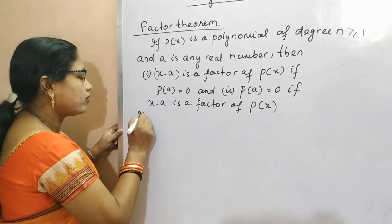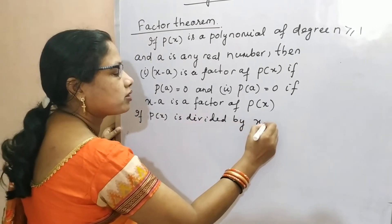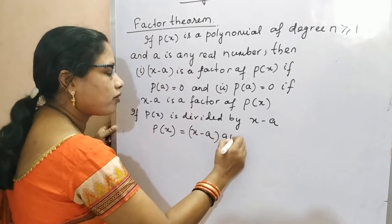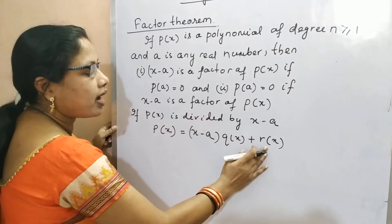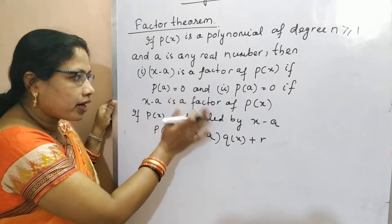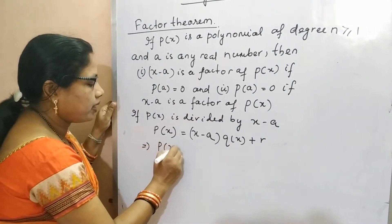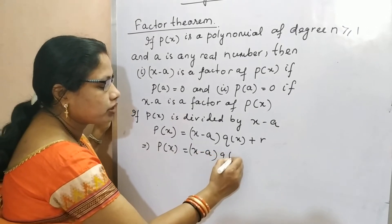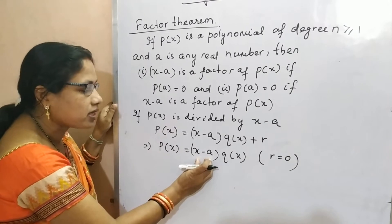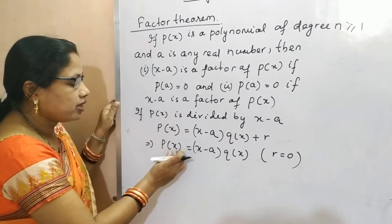What is our remainder theorem? If P of X is divided by X minus A, then P of X is equal to X minus A, whole into Q of X, plus R, where R is the remainder. In the first statement, it is given that P of A is equal to 0. According to the remainder theorem, P of A is the remainder, so the remainder is equal to 0. This implies P of X is equal to X minus A, whole into Q of X. That means it is the product of two polynomials, so it is proved that X minus A is a factor of P of X.